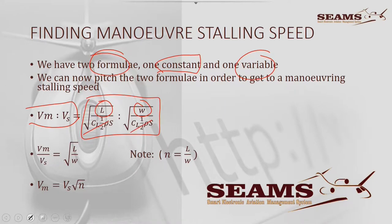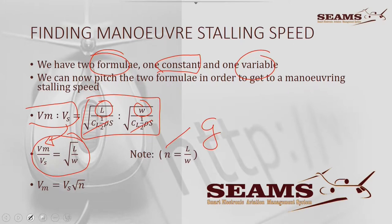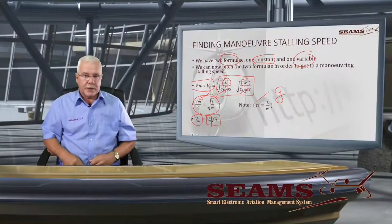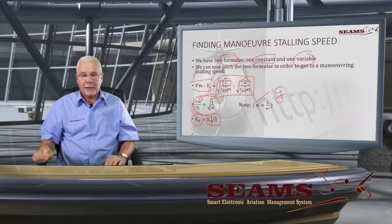That makes exploiting the lift formulas easier, because we've got two formulas: one is a constant with weight, and one is a variable with lift. We play these two off against each other. If you take Vs, move it to the bottom, square root of lift and weight to the bottom — note: N, or your G, equals lift over weight. Therefore, maneuvering stalling speed equals the basic stalling speed multiplied by the square root of the load or the G's. Keep that one in mind.